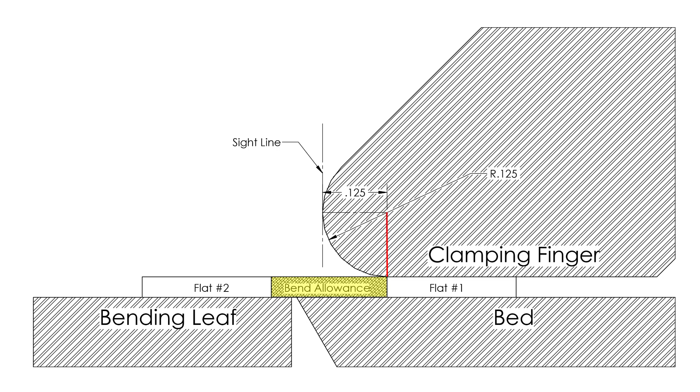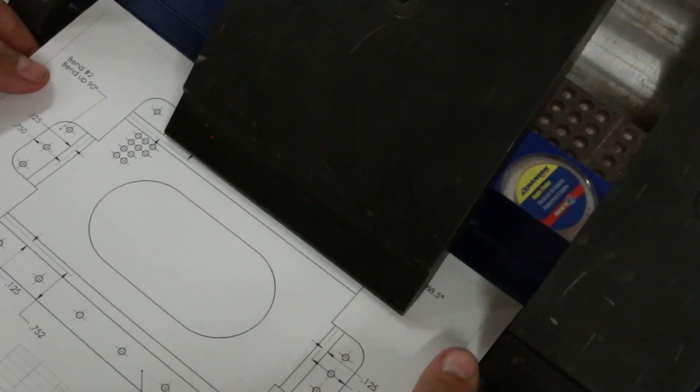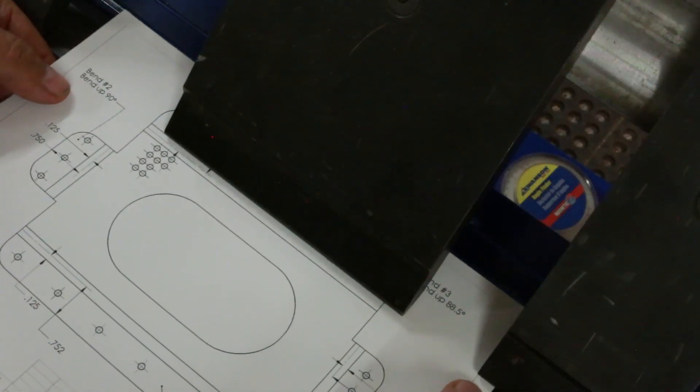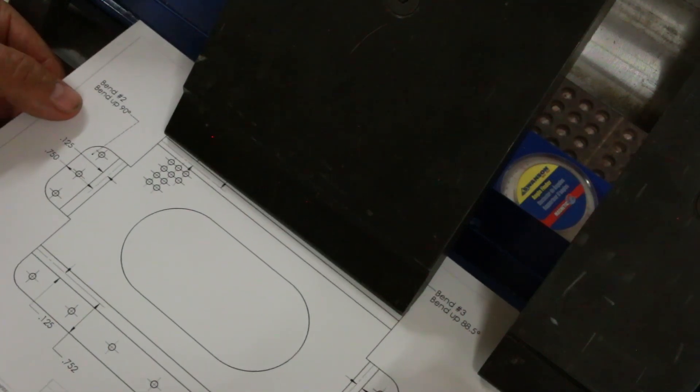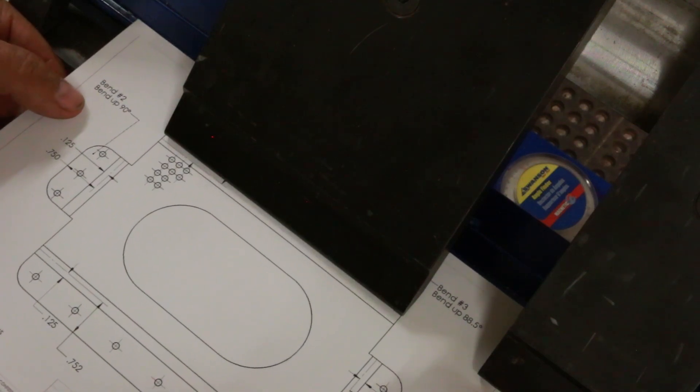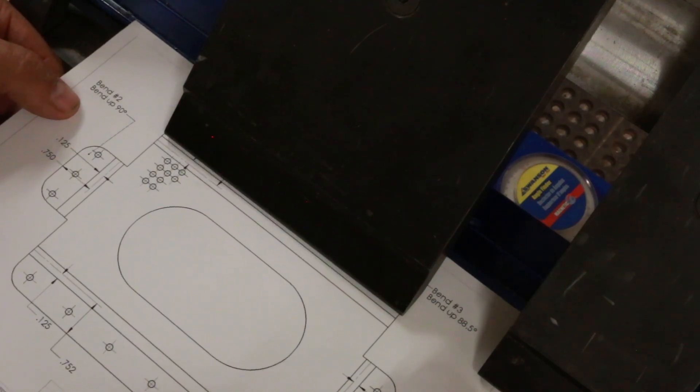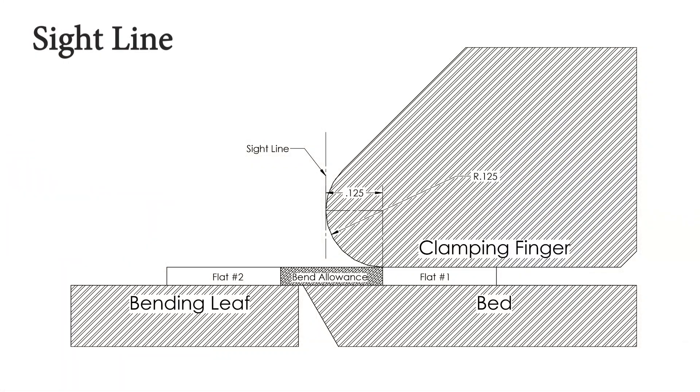Keep in mind, this is the section of material that is underneath the clamping finger. Once clamped in place, we are unable to see at least half of the bend allowance section. So how do we precisely locate the mark on the sheet metal that denotes the beginning of our bend when we can't even see it? The trick is: move the mark. We call this the sight line.